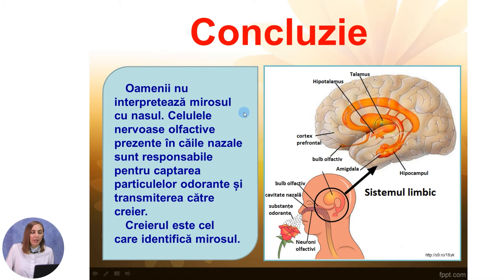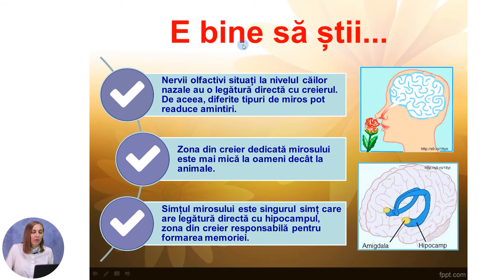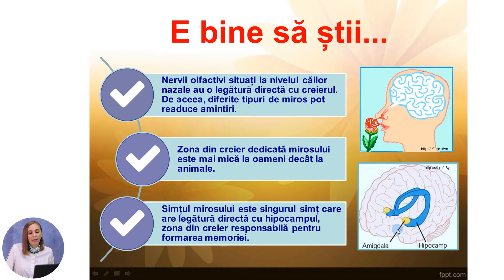Concluzie: oamenii nu interpretează mirosul cu nasul. Celulele nervoase olfactive prezente în căile nazale sunt responsabile pentru captarea particulelor odorante și transmiterea către creier. Creierul este cel care identifică mirosul. Este bine să știi că nervii olfactivi situați la nivelul căilor nazale au o legătură directă cu creierul — de aceea, diferite tipuri de miros pot readuce amintiri. Zona din creier dedicată mirosului este mai mică la oameni decât la animale. Simțul mirosului este singurul simț care are legătură directă cu hipocampul, zonă din creier responsabilă pentru formarea memoriei.